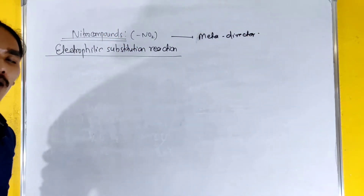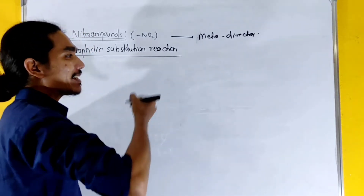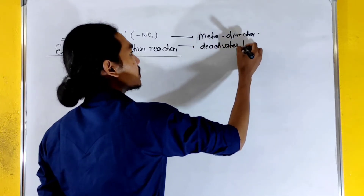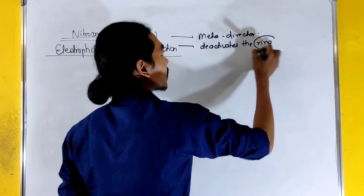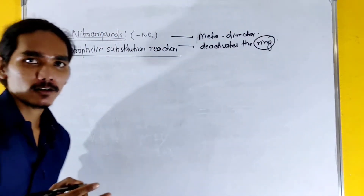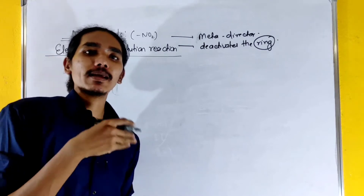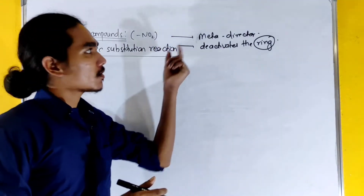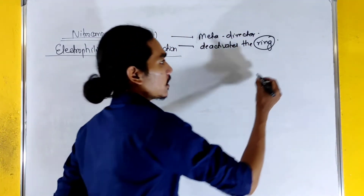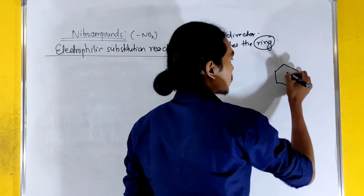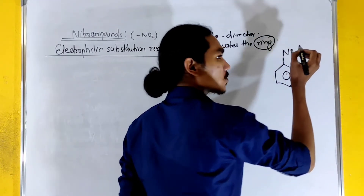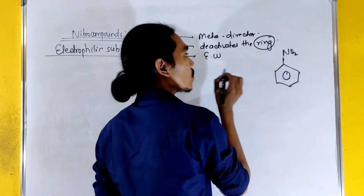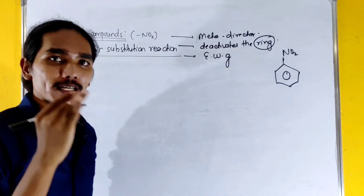Meta-directing means it deactivates the benzene ring towards electrophilic aromatic substitution. Incoming electrophiles go to the meta-positions. This is benzene, and the Nitro Compound NO2 is an electron-withdrawing group.